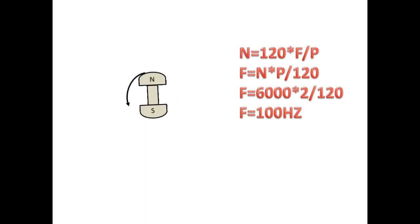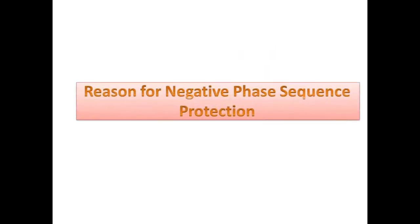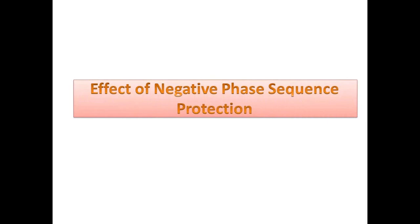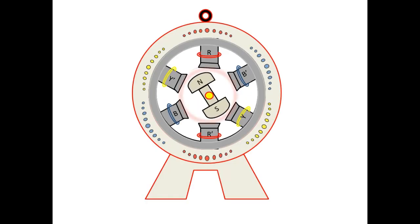Next we will see what are the reasons for the negative sequence produced in the system. If we connect unbalanced load with generator it will also produce negative sequence current. If any pole of the breaker is not closing while closing the breaker it will also produce negative sequence current and also for broken contact of the transmission line it also causes negative sequence current. Due to current produced on rotor it will cause overheat on rotor surface.